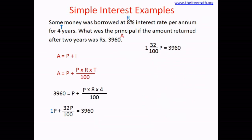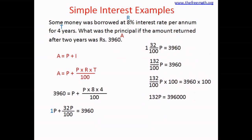Converting the mixed number to an improper fraction: 100 times 1 plus 32 equals 132, so 132 over 100 times P equals 3,960. Multiplying both sides by 100, the 100s on the left cancel out giving 132P, and on the right 3,960 multiplied by 100 gives 396,000. To isolate P, divide both sides by 132, giving P equals 396,000 divided by 132.